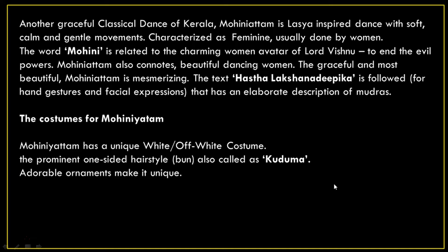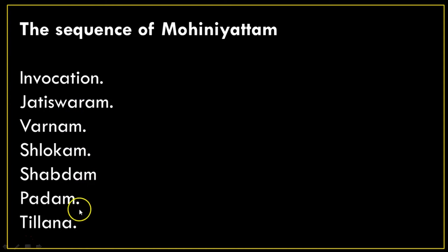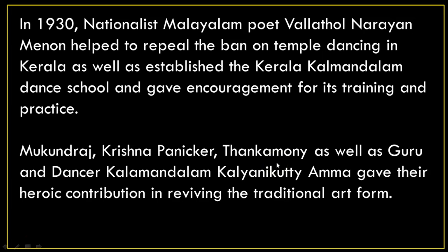Mohiniyattam follows a sequence performed in seven steps: first is invocation, second is jatiswaram, third is varnam, fourth is shlokam, fifth is shabdam, sixth is padam, and seventh is tillanam.